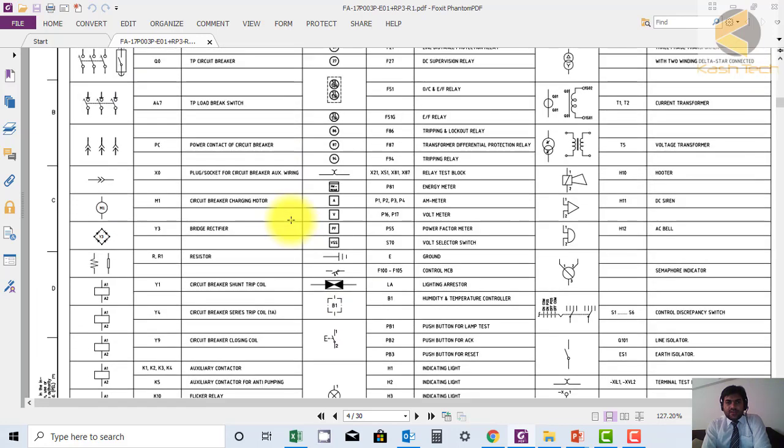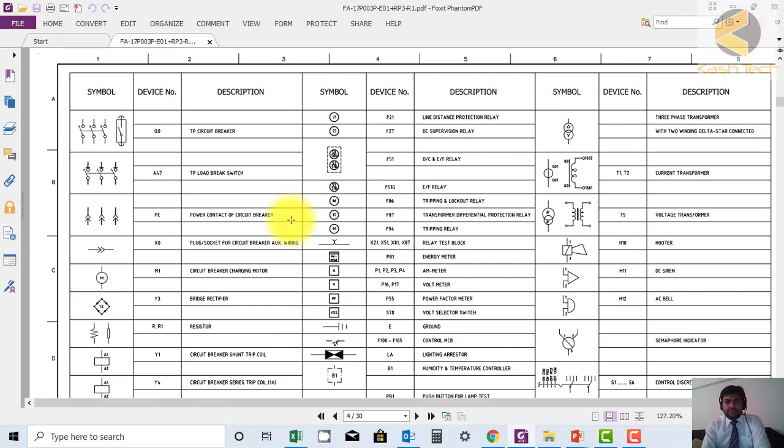You can see here different symbols are defined. For example, they have defined the symbol of a circuit breaker. There could be different types of symbols depending upon different regions. Each drawing at the start shows symbols, and you can confirm if you are confused about any specific symbol.